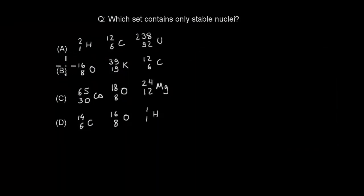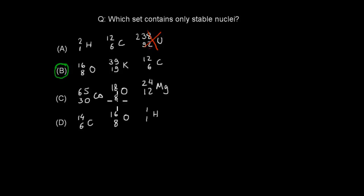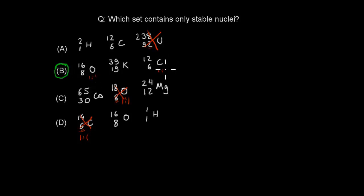The correct answer is B. Looking at the other options: Uranium has atomic number 92, greater than 83, so it's definitely a radioisotope and not stable. In option C, Oxygen-18 has a neutron-to-proton ratio well above 1-to-1 for an element with atomic number less than 20, making it a radioisotope. In option D, Carbon-14 also has a ratio above 1-to-1, making it a radioisotope. In option B: Oxygen-16 (16,8) has a 1-to-1 ratio, Carbon-12 (12,6) has a 1-to-1 ratio, and Potassium-39 (19,39) is approximately 1-to-1. So B is correct — all are stable with appropriate neutron-to-proton ratios.